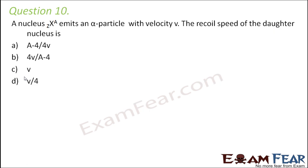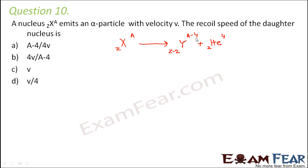Question number 10: A nucleus X(Z,A) emits an alpha particle with velocity V. The recoil speed of the daughter nucleus is? Let us first write down the equation — that will make our job simpler. The nucleus emits an alpha particle, which is a helium nucleus. The daughter nucleus has atomic number reduced by 2 and mass number reduced by 4.